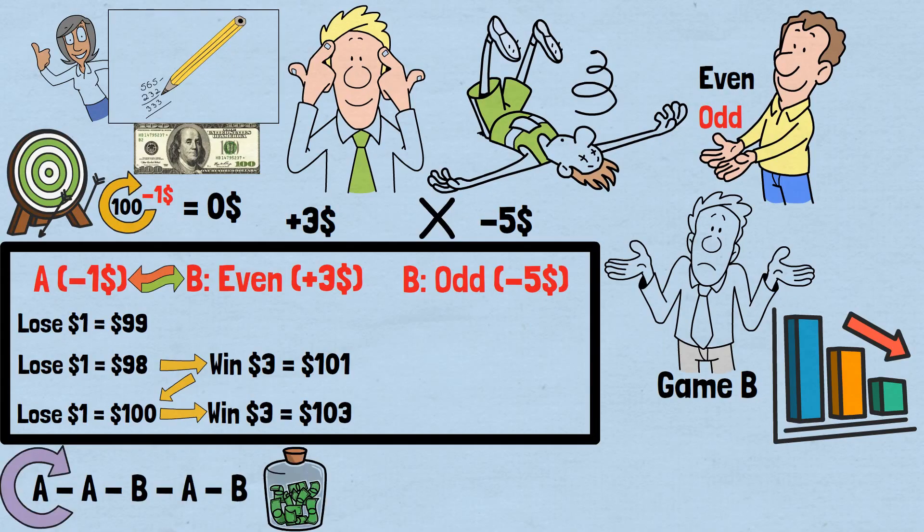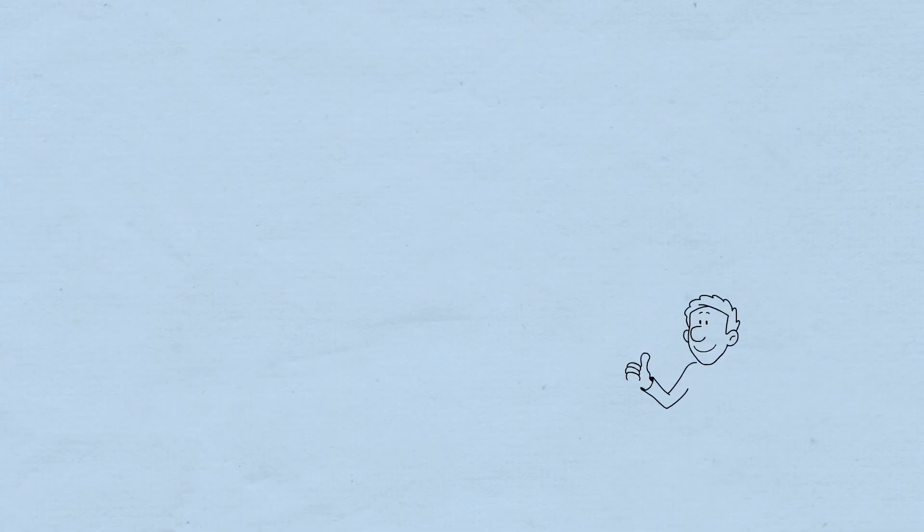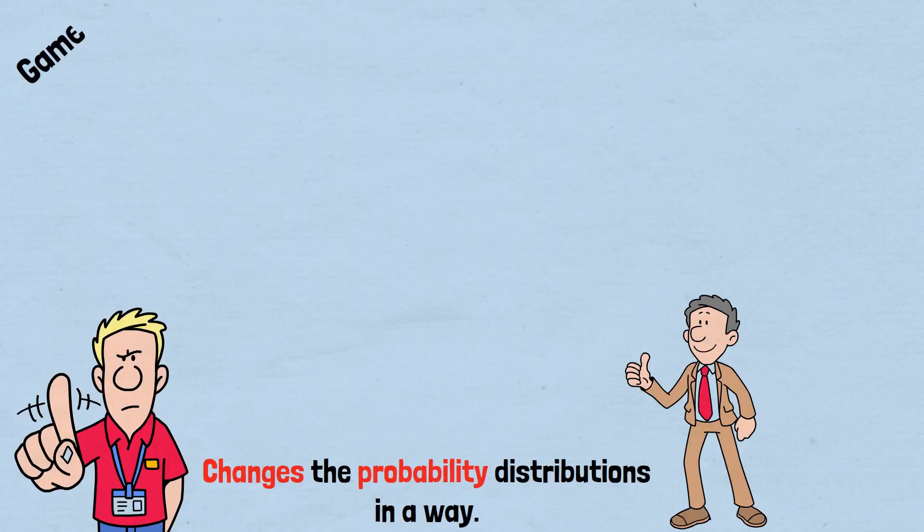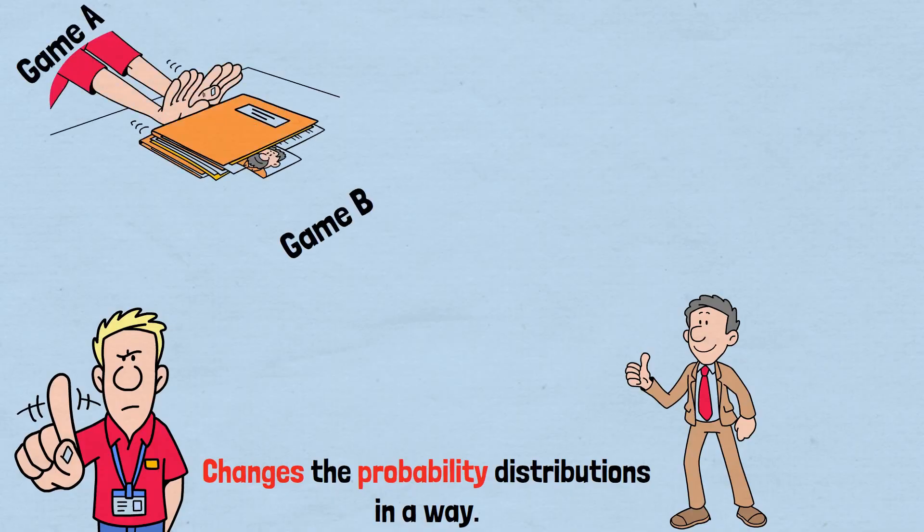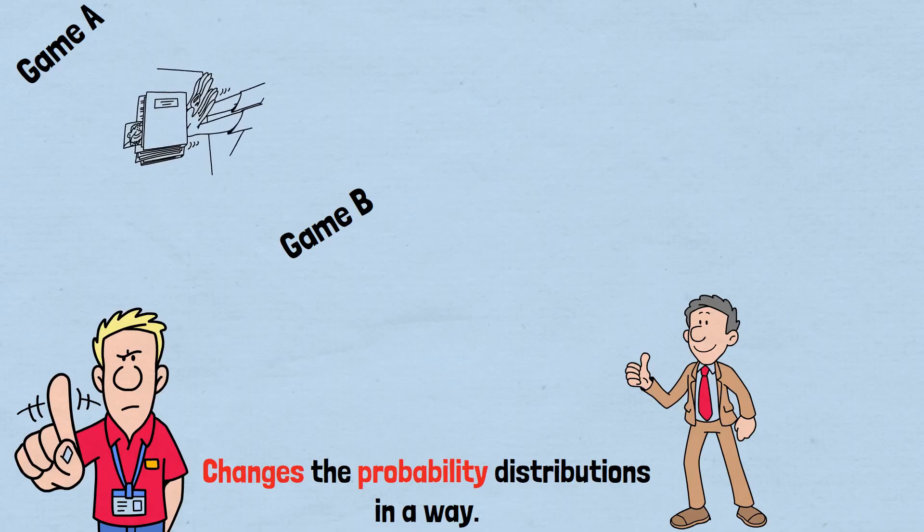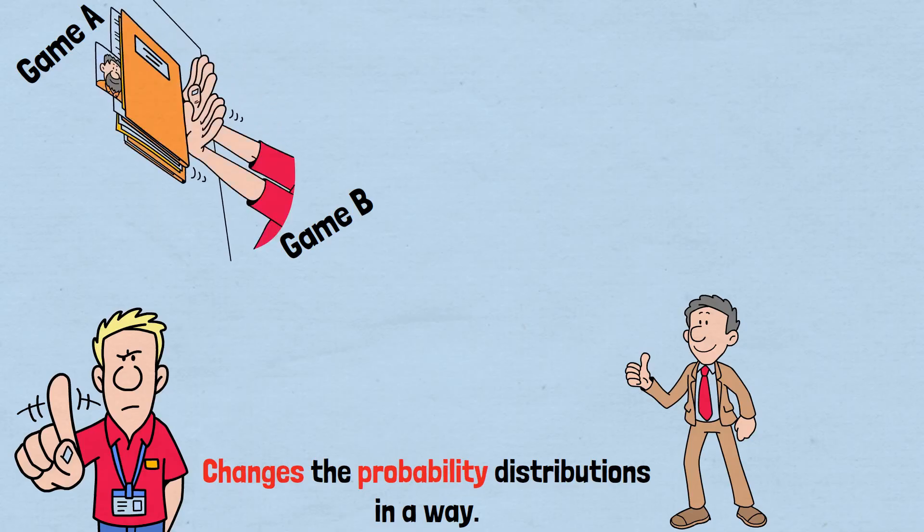The paradox works because alternating between the games changes the probability distributions in a way that neither game can achieve alone. Game A pushes your money total in a direction that makes Game B more favorable, while Game B pushes your money total in a direction that makes Game A more favorable.